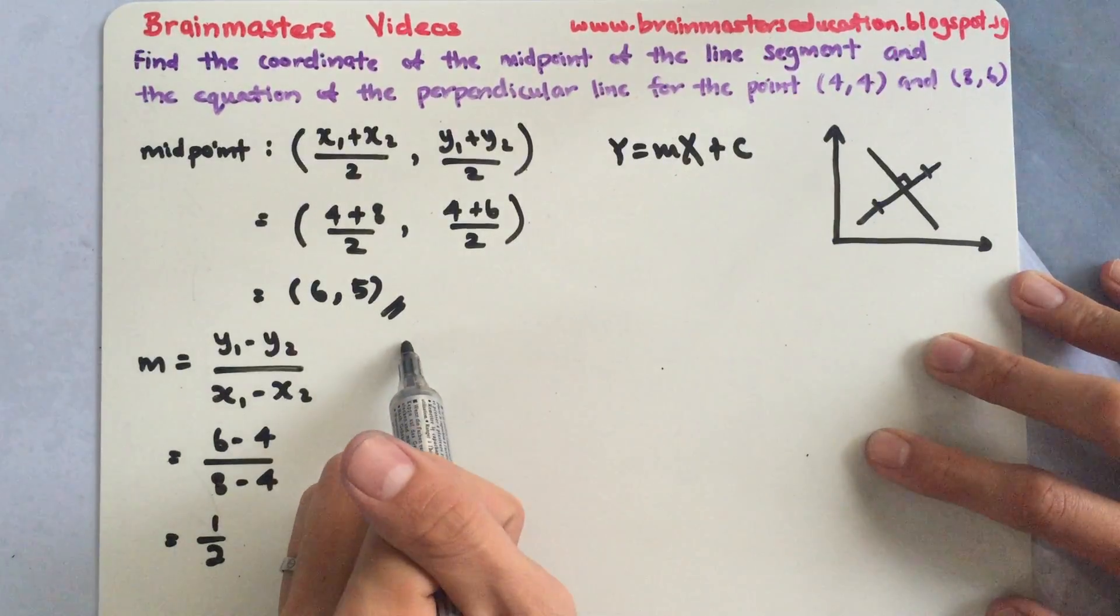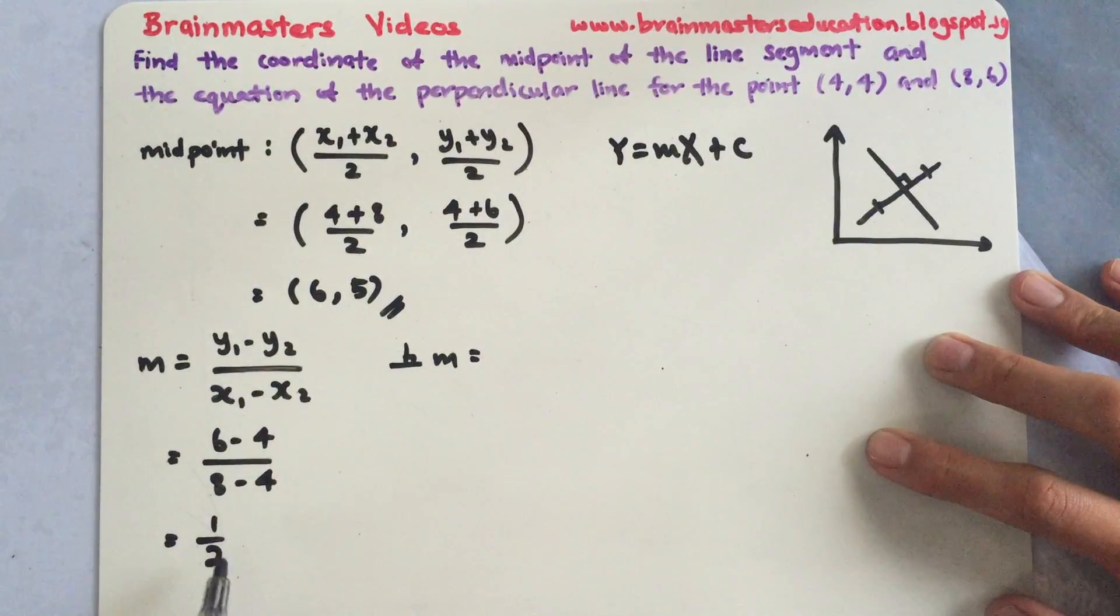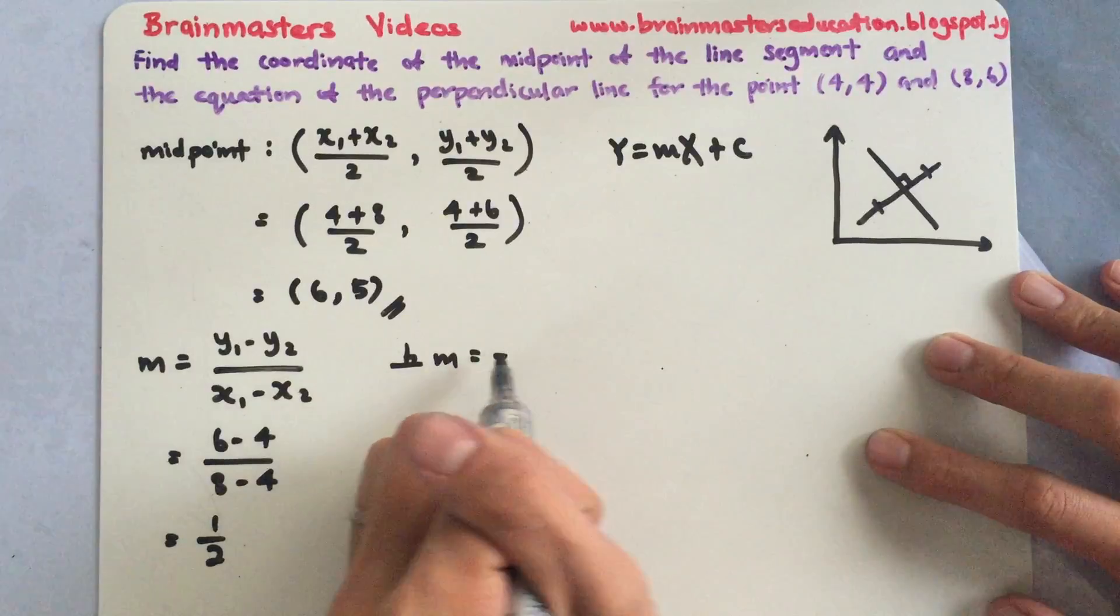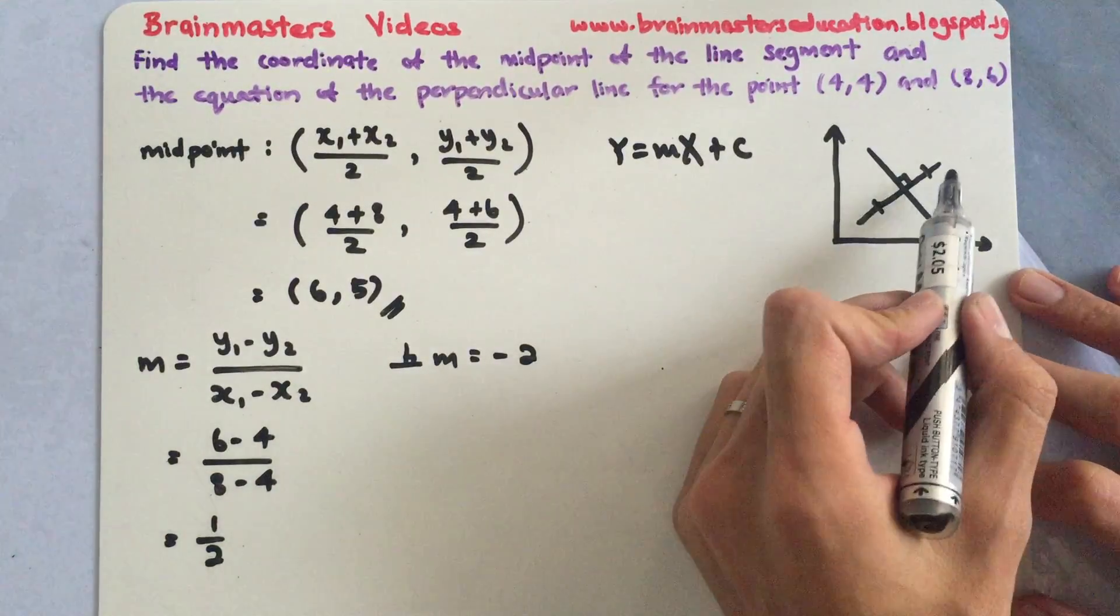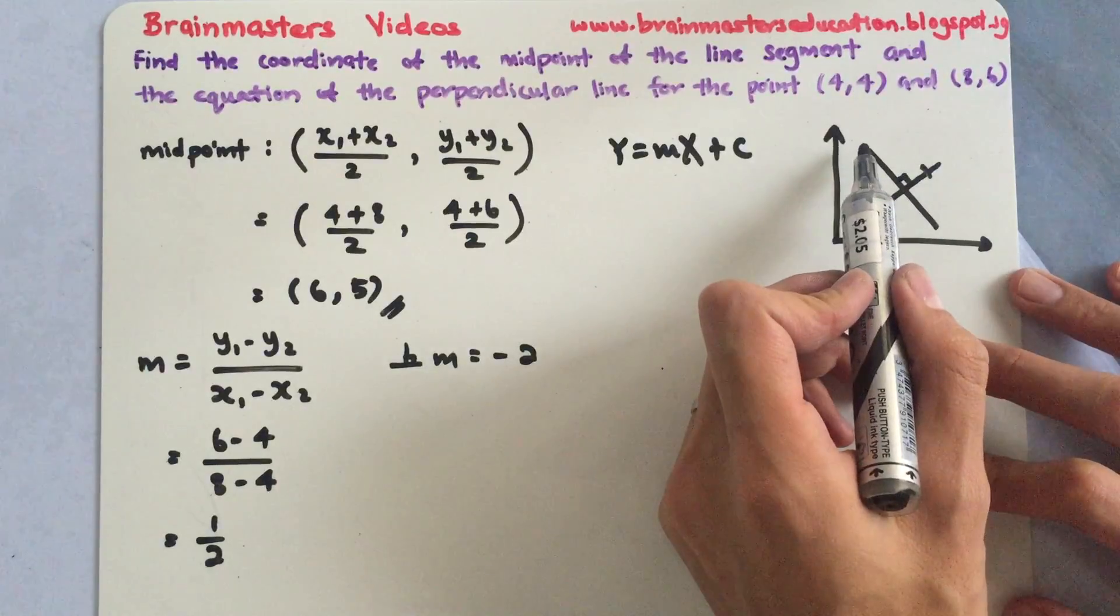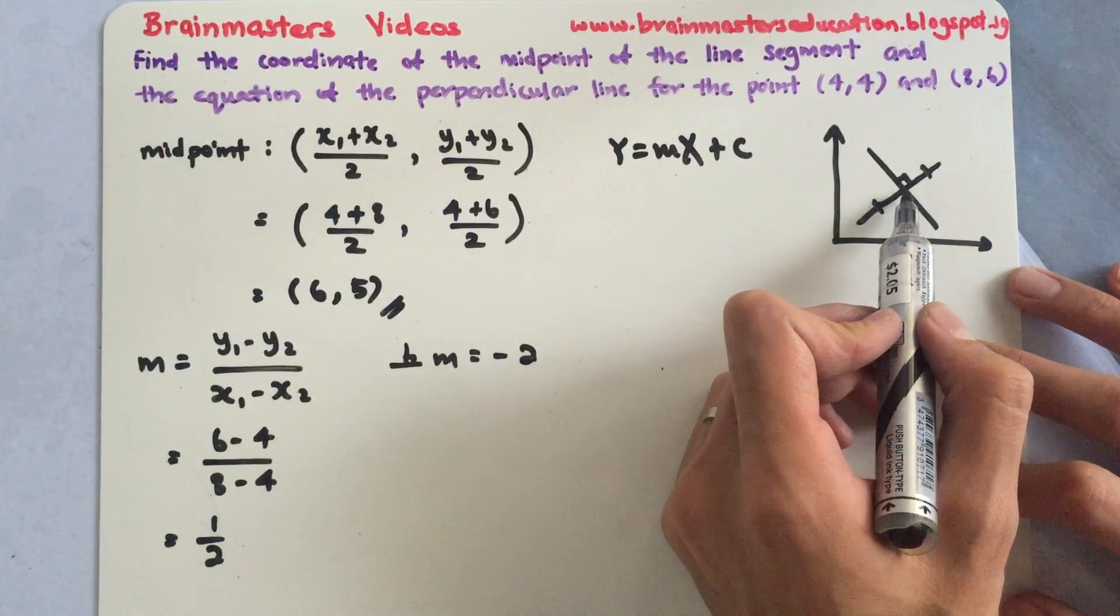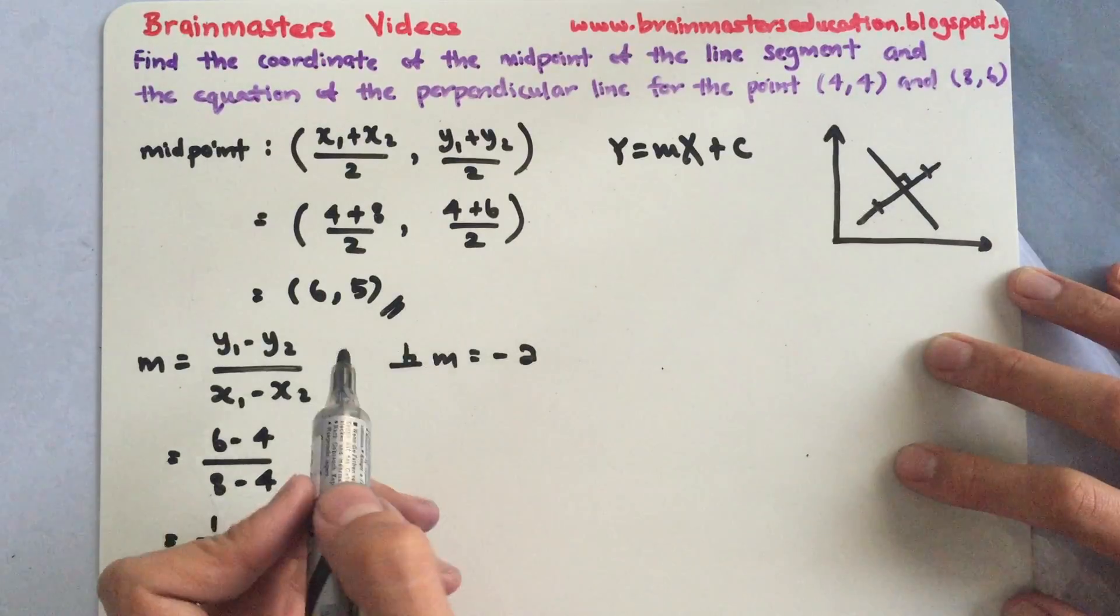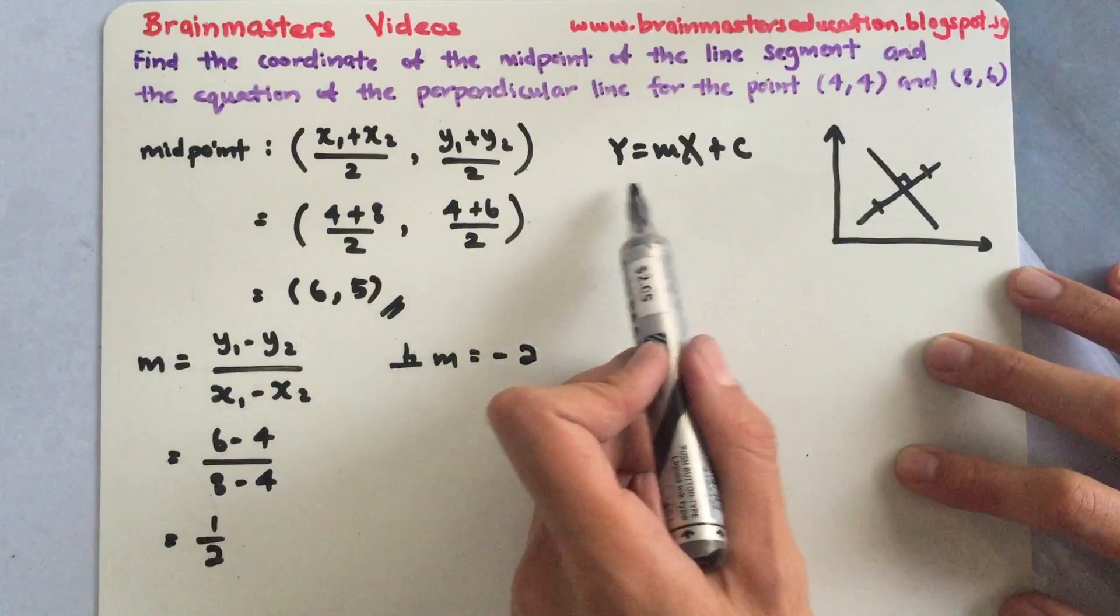This gradient is for here. So my perpendicular gradient, okay, perpendicular gradient will actually be flip them up, which is 2 over 1 and add a negative, which gives me negative 2. So this line, the perpendicular line cuts the point at (6,5), which is the midpoint, correct? So I also know that I'll have (6,5) as my x and my y. So put it into this equation.